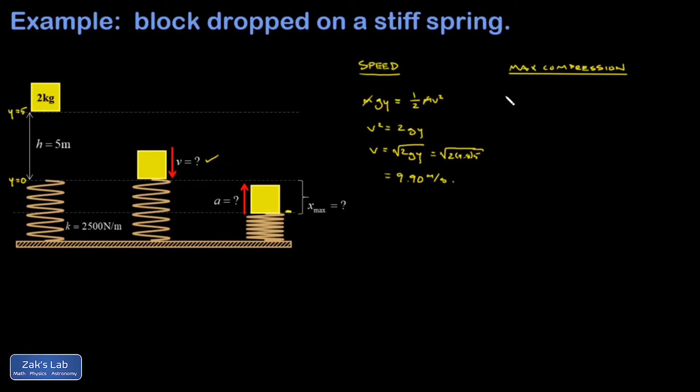So I'm going to write down my energy conservation equation. In the initial state, I had all potential energy, mgy initial. In my final state, the mass is now below the zero that I created from measuring my y-coordinate. If I'm using x max for the compression, then the y-coordinate here is actually negative x max. So in my final state, I have this negative gravitational potential energy. There's no kinetic energy in the final state because the block is at the maximum compression, that's where it's turning around. But there is spring potential energy.